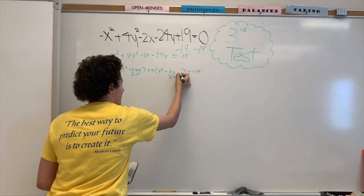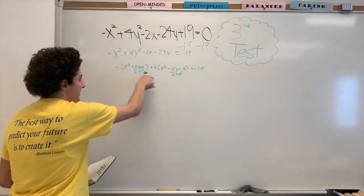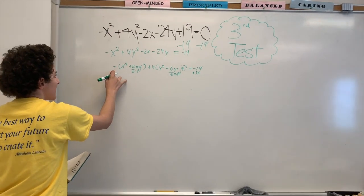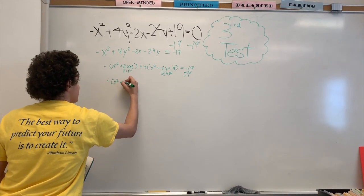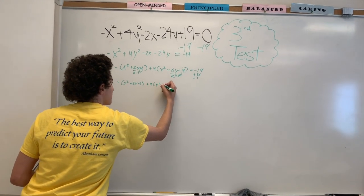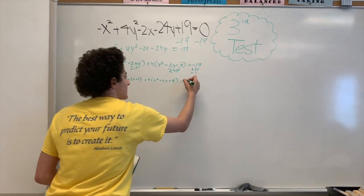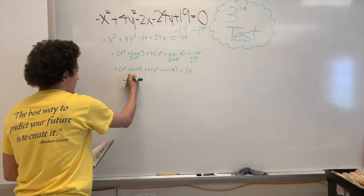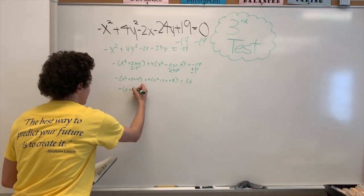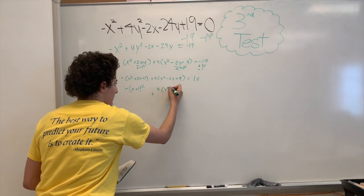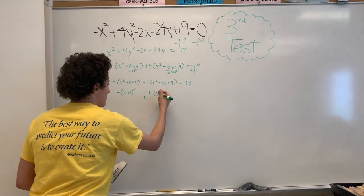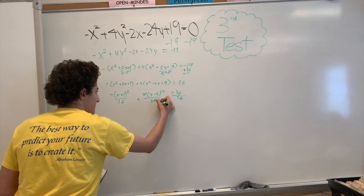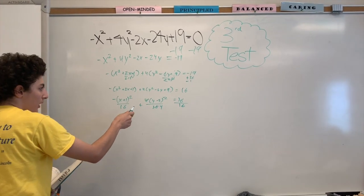For the x term, dividing by 2 gives negative 3, so I square that to get 9 and add plus 9 inside the parentheses. I need to add these values to the other side as well. Since there are coefficients on the parentheses, I multiply the 9 by 4 to get plus 36, and multiply the 1 by negative 1 to get minus 1. This gives negative(x squared minus 2x plus 1) plus 4(y squared minus 6y plus 9) equals 16. Converting to squared forms: negative(x plus 1) squared plus 4(y minus 3) squared equals 16. Dividing both sides by 16, and since 4 and 16 cancel to give 4 on the bottom, the final equation is negative(x plus 1) squared over 16 plus (y minus 3) squared over 4 equals 1.